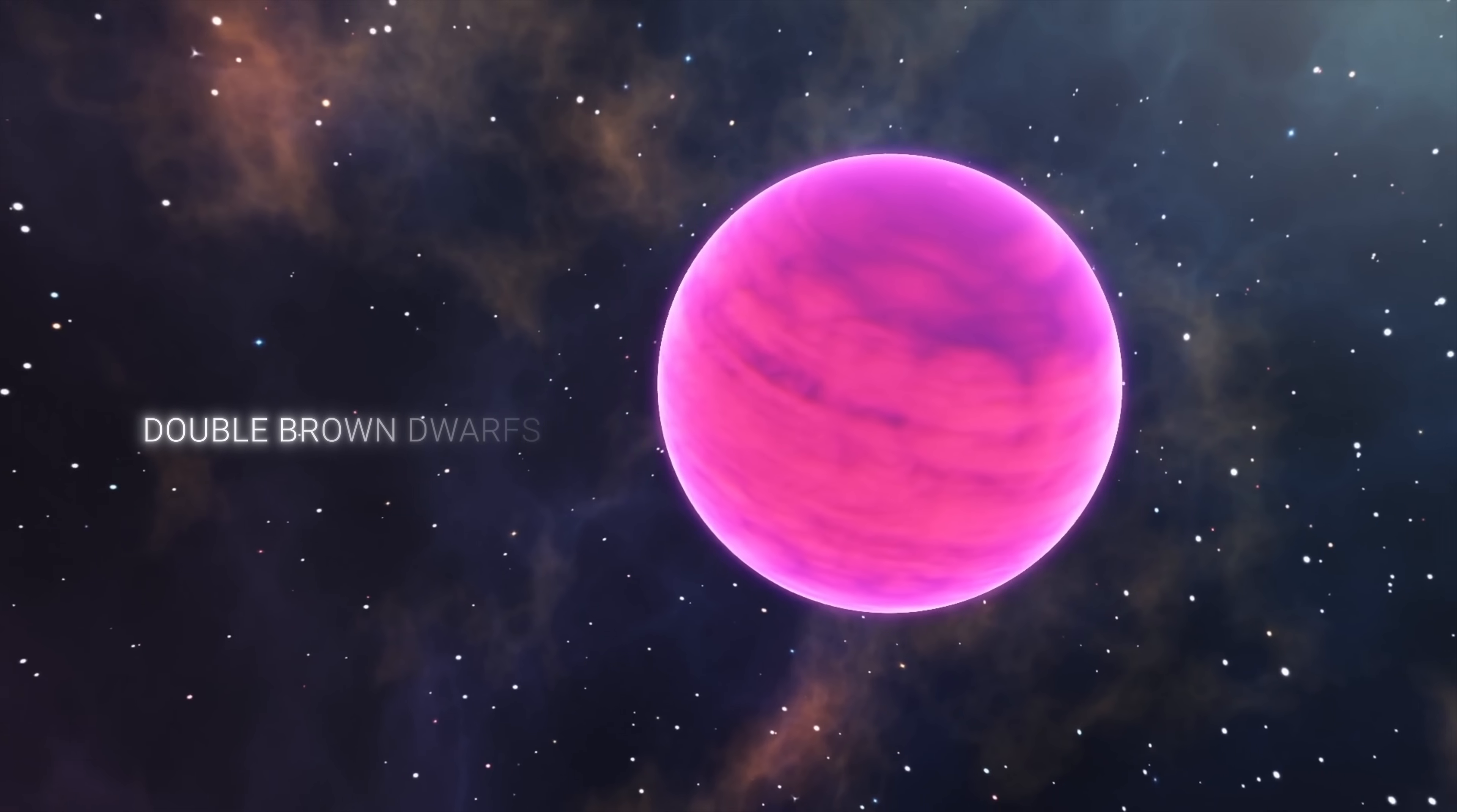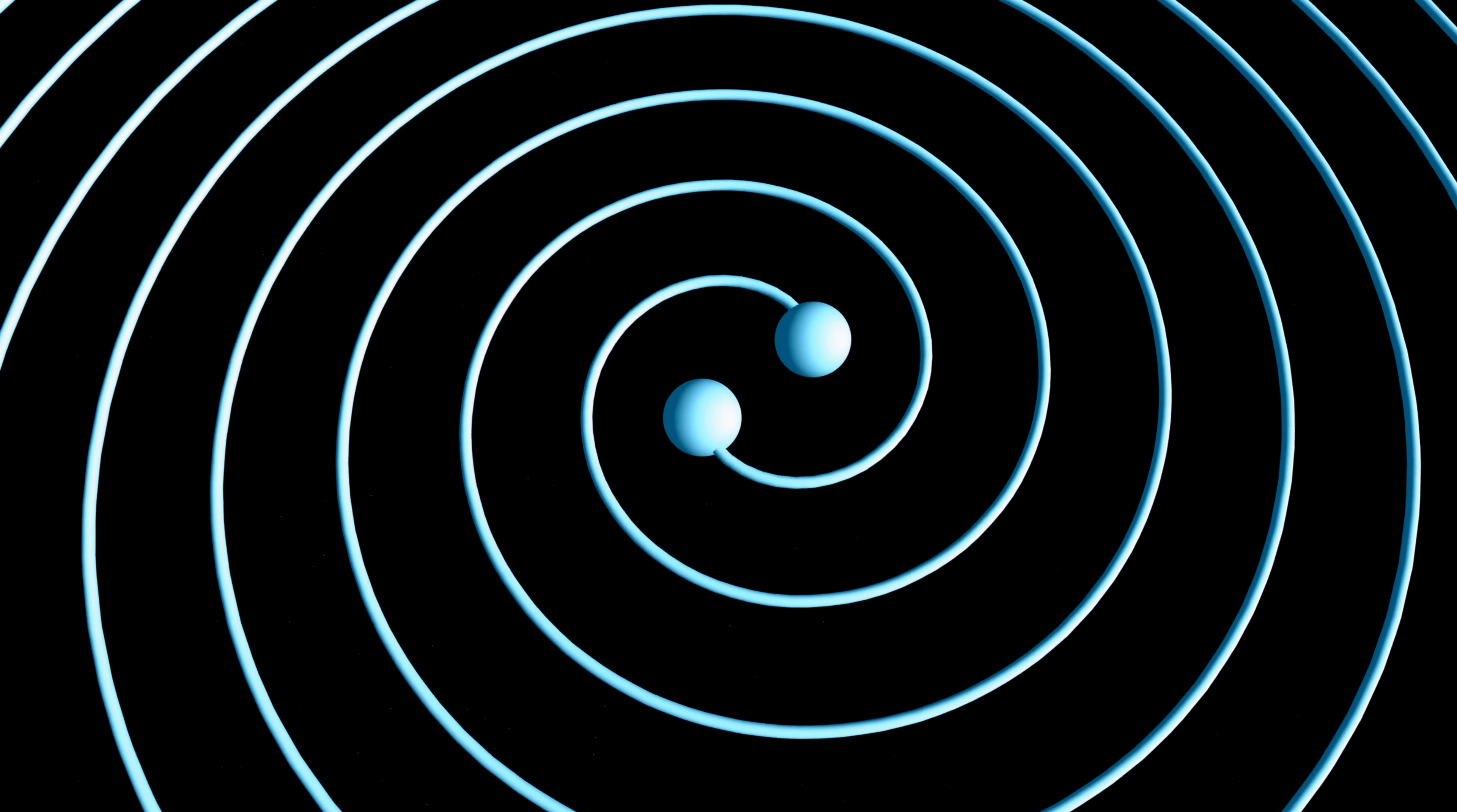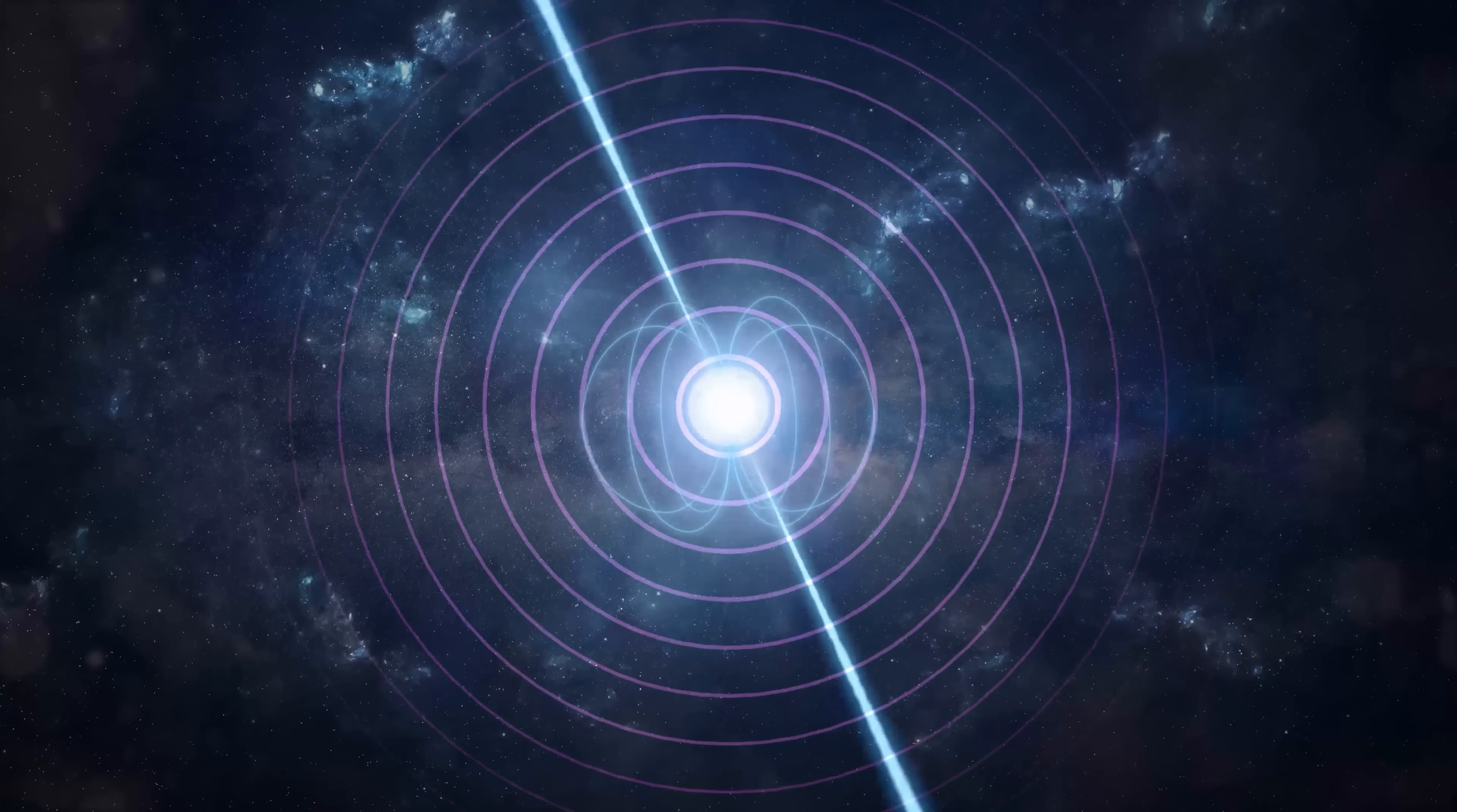Now finally, let's look at double brown dwarfs, objects on the boundary between planets and stars. When two such brown dwarfs orbit around each other, their magnetic fields can interact, potentially emitting radio waves. Now again, while this theory breaks new ground, it's not fully consistent with the data we have. Magnetic interactions between double brown dwarfs are likely to produce a more chaotic signal rather than this rhythmic, clock-like pulse of GPM J1839-10.